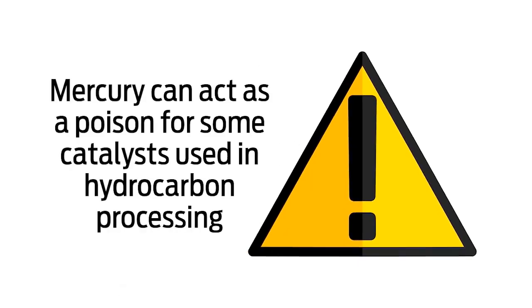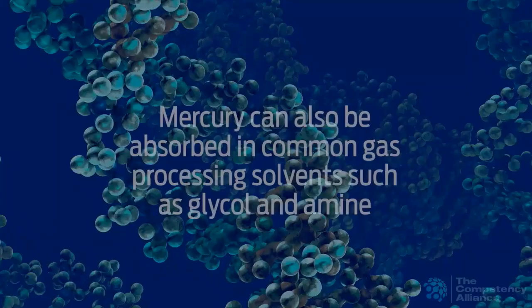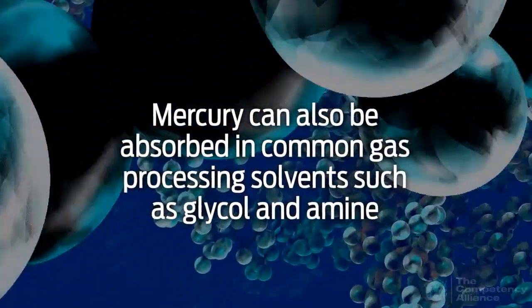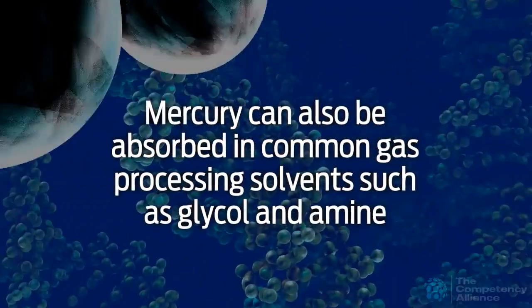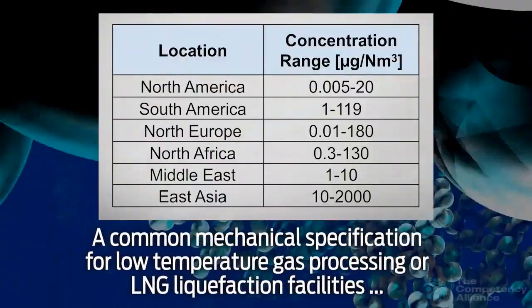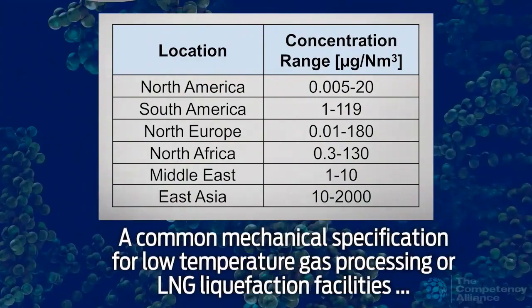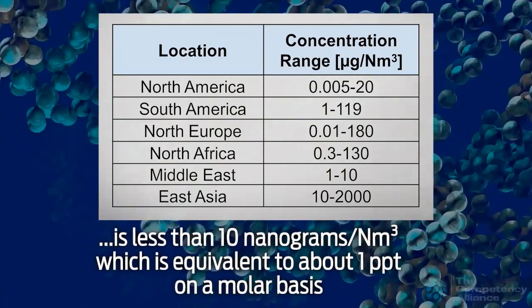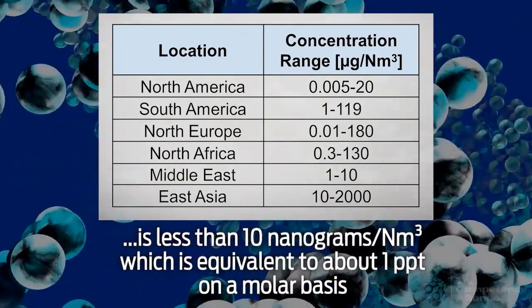Mercury can also act as a poison for some catalysts used in hydrocarbon processing. Mercury can also be absorbed in common gas processing solvents, such as glycol and amine, and will concentrate in the vapor stream leaving the regeneration system. A common mechanical specification for low-temperature gas processing or LNG liquefaction facilities is less than 10 nanograms per normal cubic meter, which is equivalent to about 1 ppt on a molar basis.